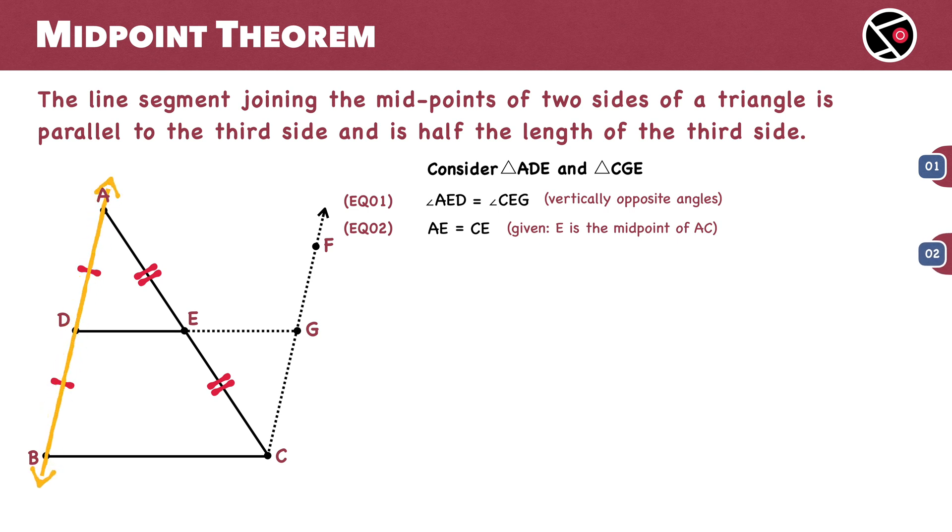BA is parallel to CF, and AC is a transversal to these two parallel lines. So, angle DAE should equal angle GCE. Why? These are alternate interior angles. And alternate interior angles are equal. This is our equation number three.